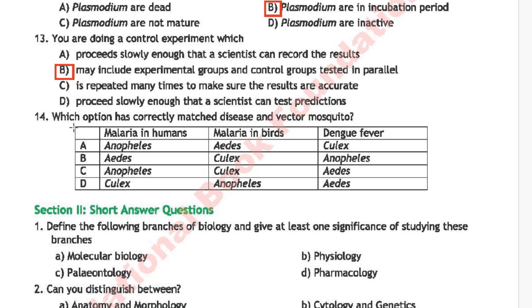The last MCQ of chapter number 1: which option has correctly matched disease and vector mosquito? The correct answer is option C.